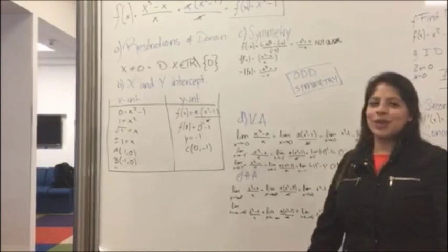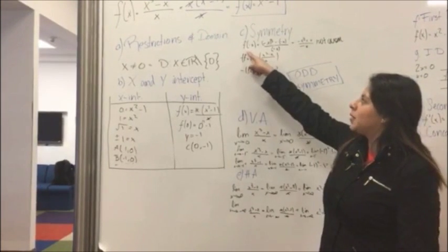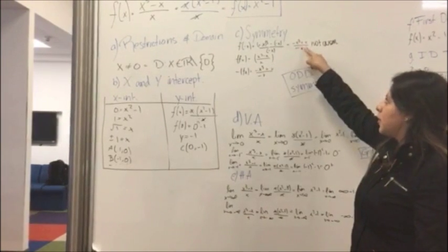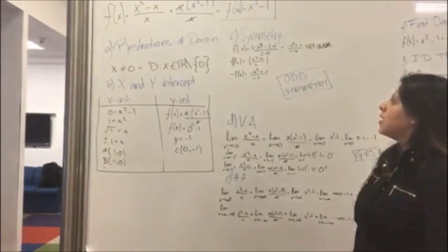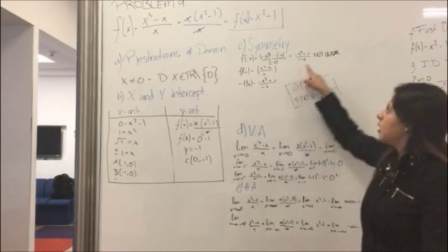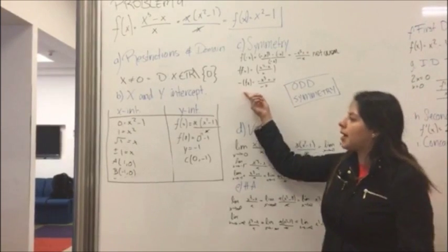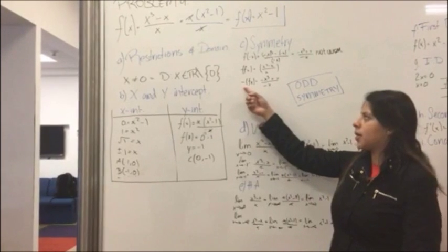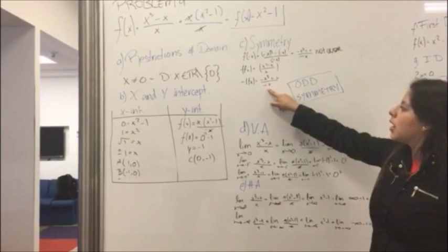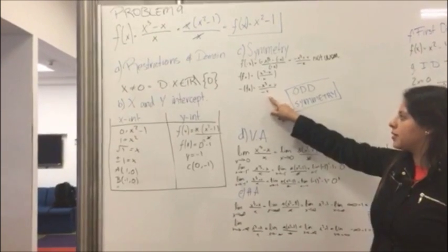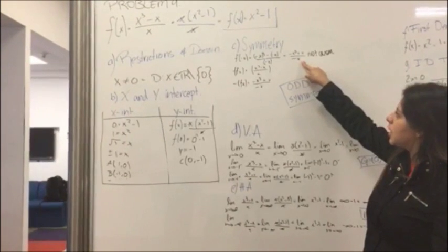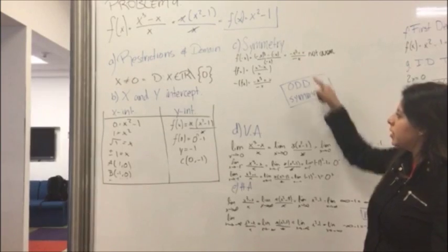To find the symmetry of this function, we evaluate f of negative x and get negative x cubed plus x over negative x. That is not equal to the original function, so it is not an even function. Taking out the negative and evaluating, we get the same expression as the previous function, so it is an odd function.